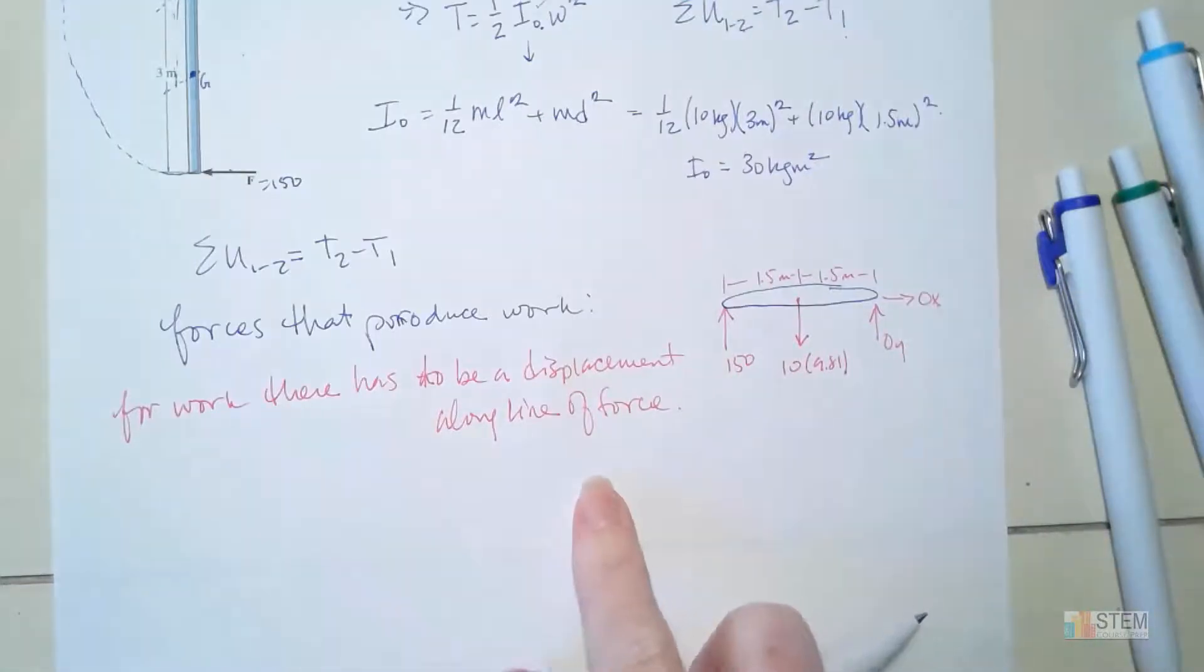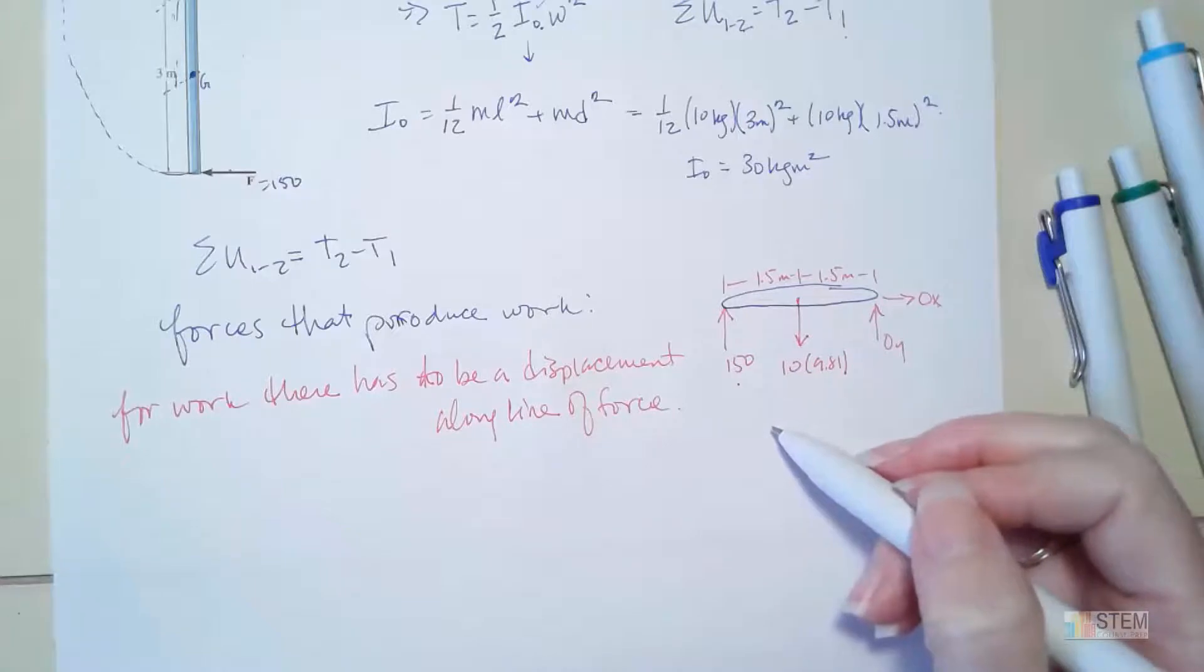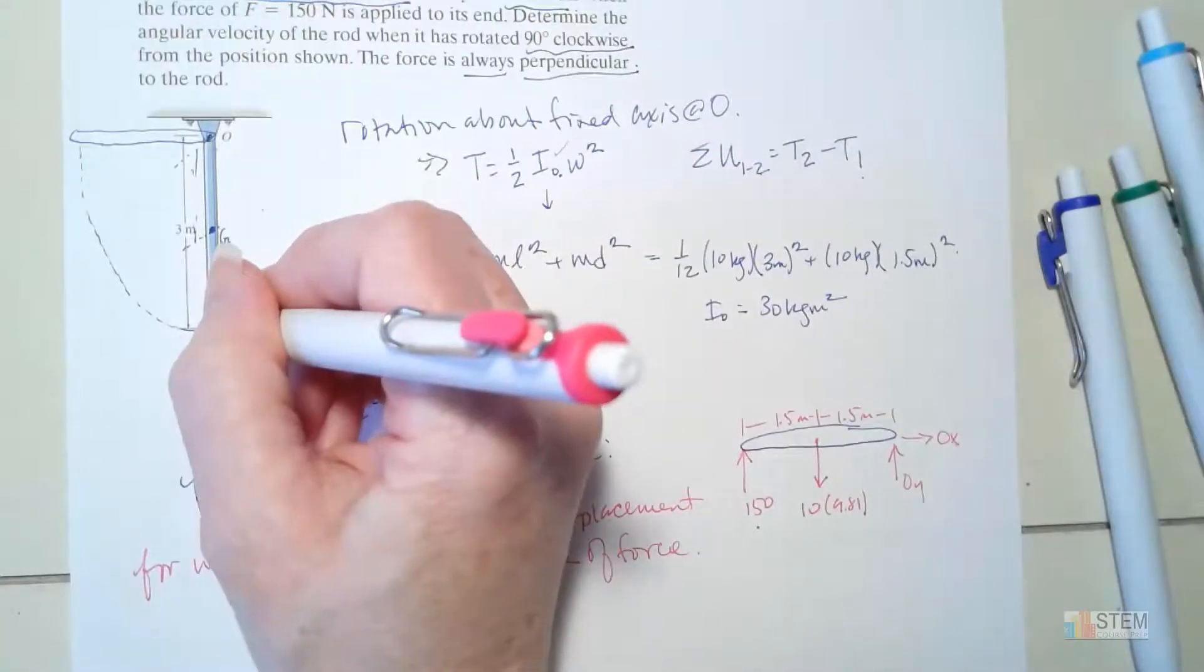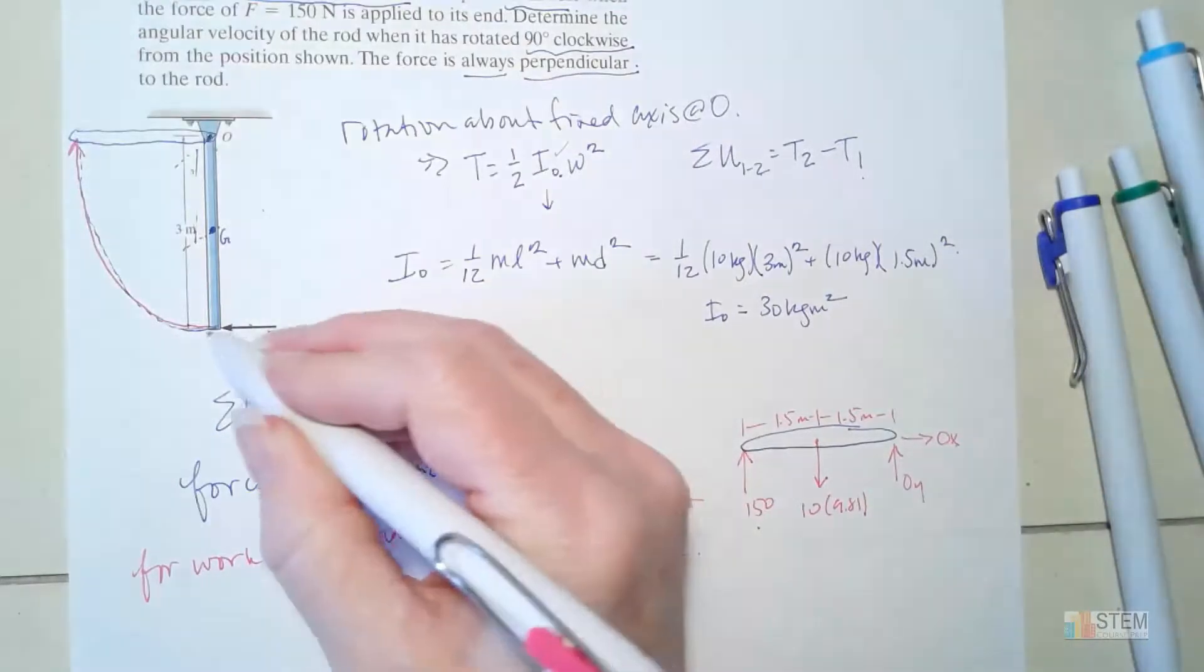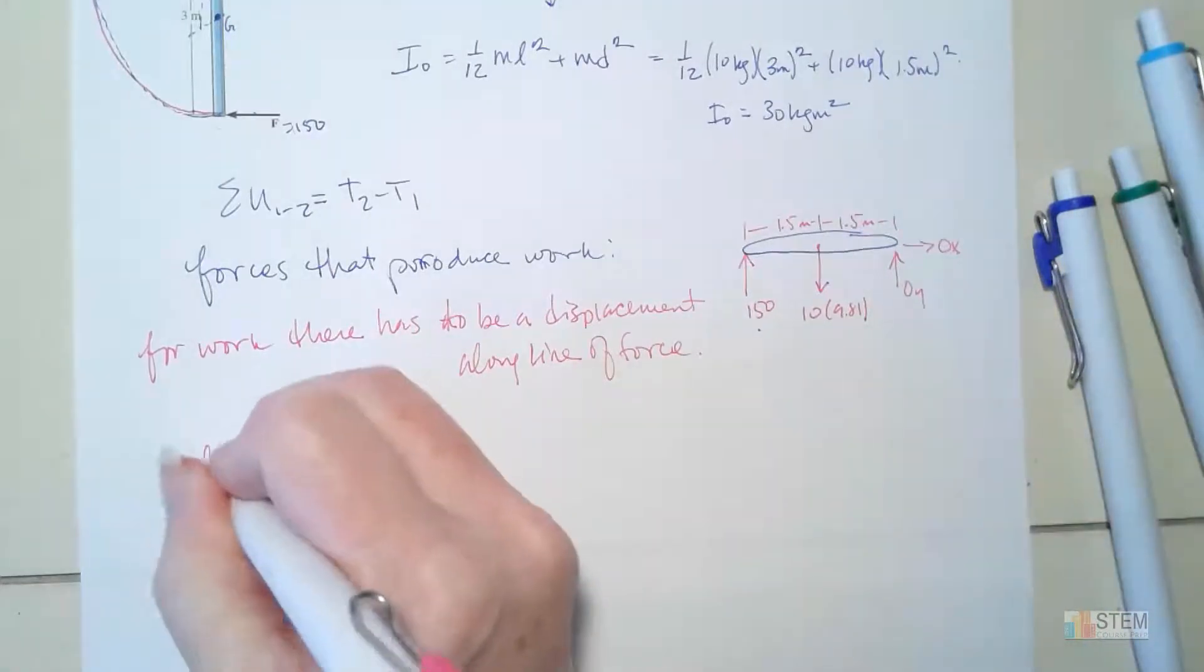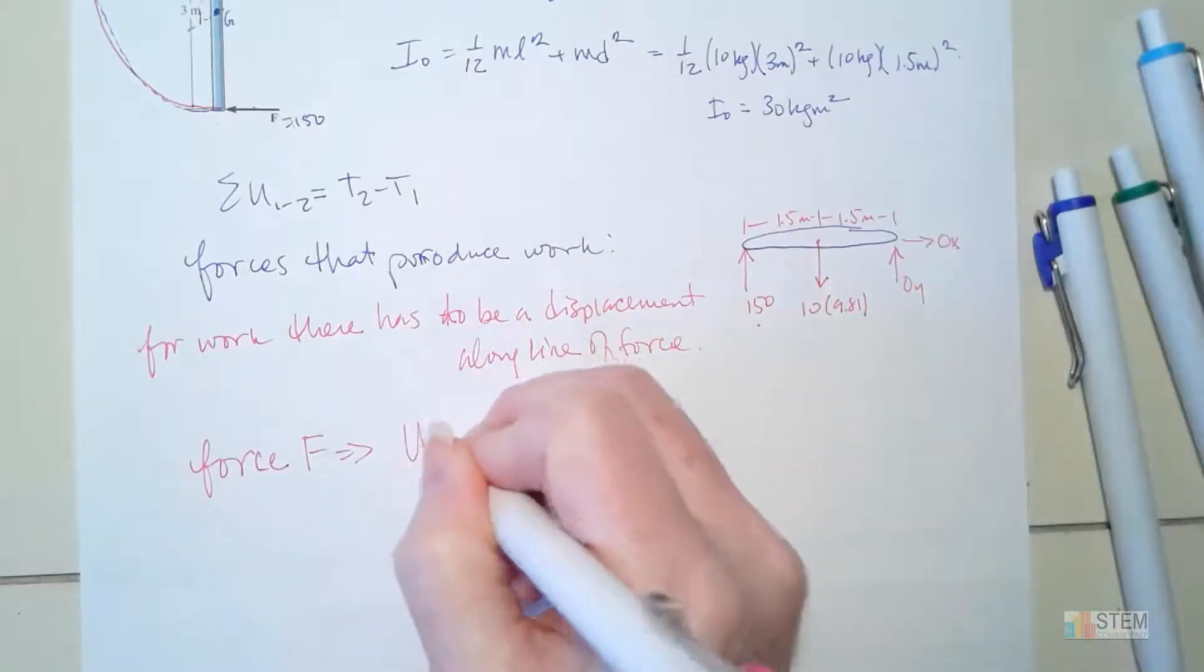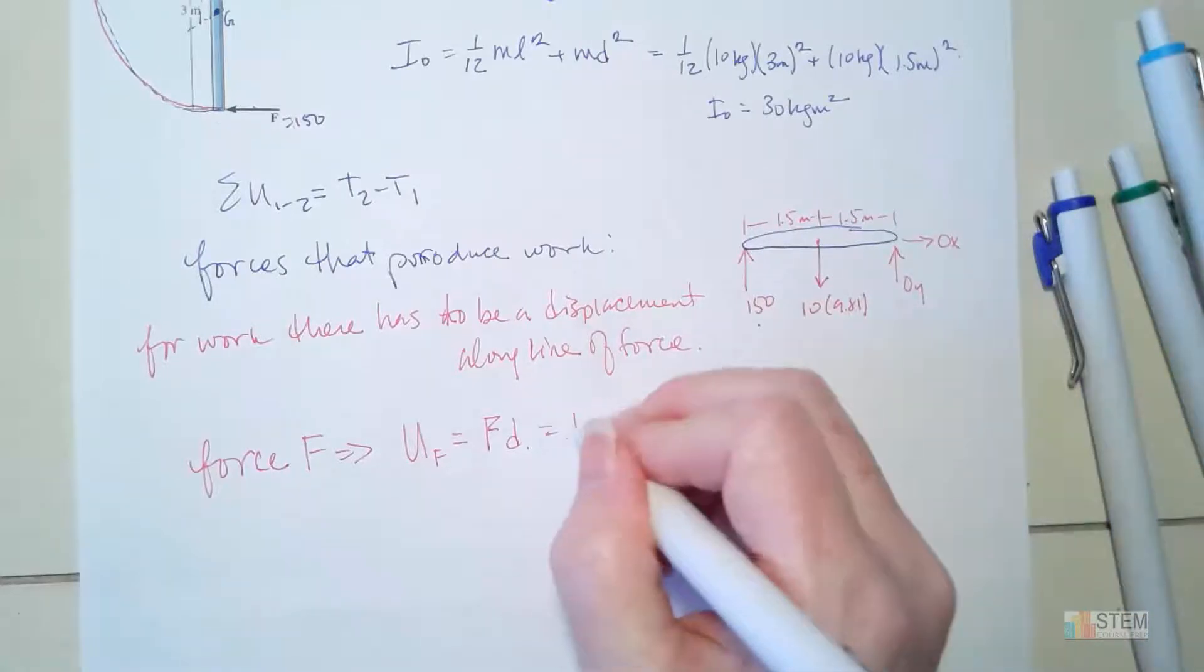Now what about the 150 N? Is there a displacement that's in the same direction as the force? There is, right? Because we're going from here and then we're following this curved path up to here. So F is always perpendicular to the rod. So that means we can find this displacement. So the force F creates work. So let's look at that one and call this U_F. So our equation is going to be the force times the distance traveled. So the force would be 150 N.